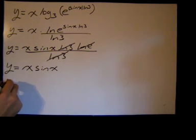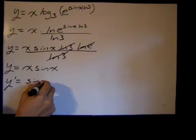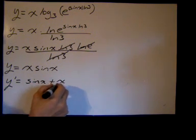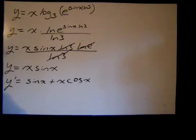Take the derivative, we use the product rule. The derivative of the first is 1 times the second is sine of x plus the first times the derivative of the second is the cosine of x. And that's it.